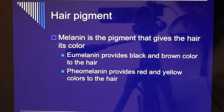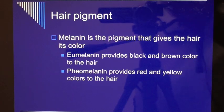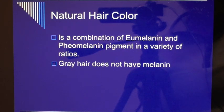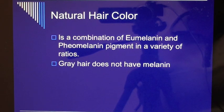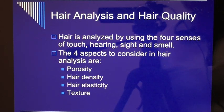Hair pigment: melanin is the pigment that gives hair its color. Eumelanin provides black and brown color to the hair. Pheomelanin provides red and yellow colors. Normal hair color is a combination of eumelanin and pheomelanin in a variety of ratios. Gray hair does not have melanin.